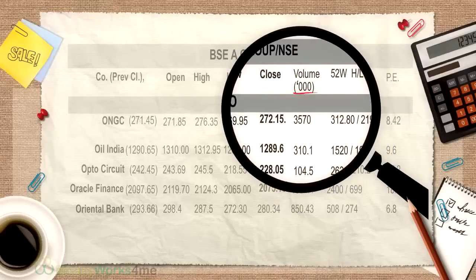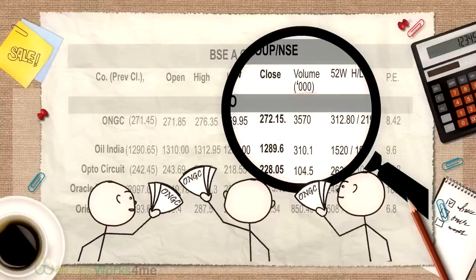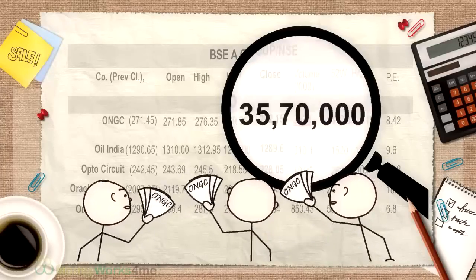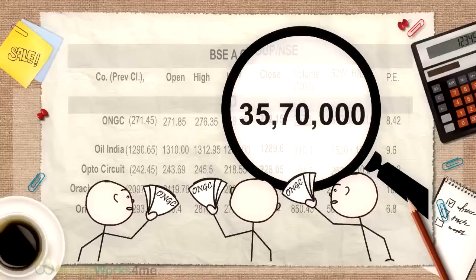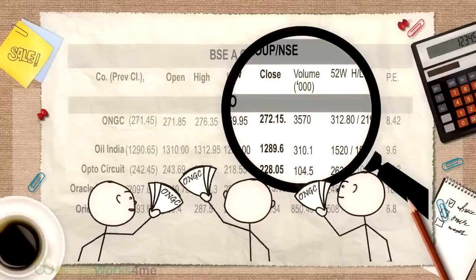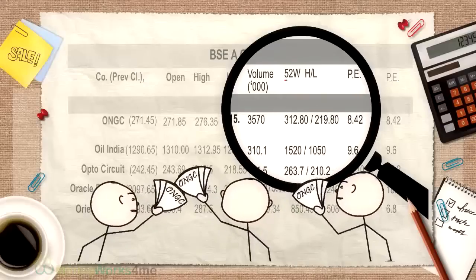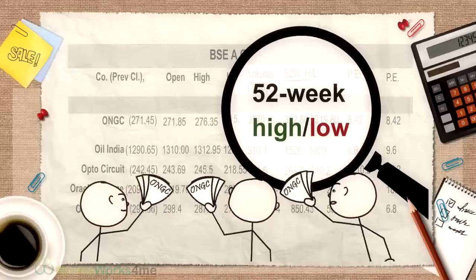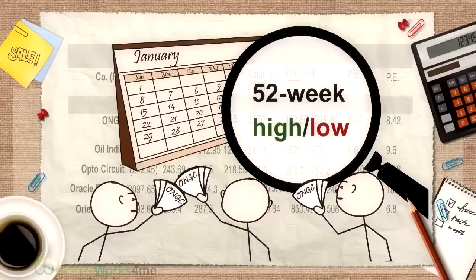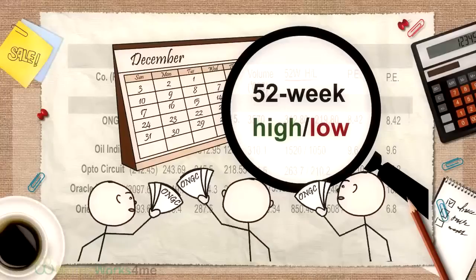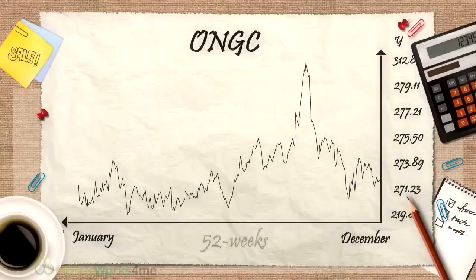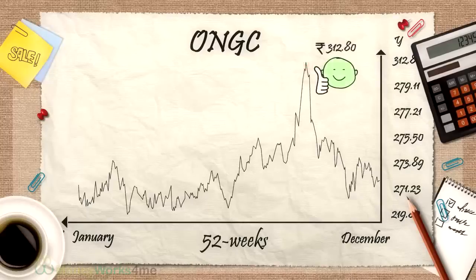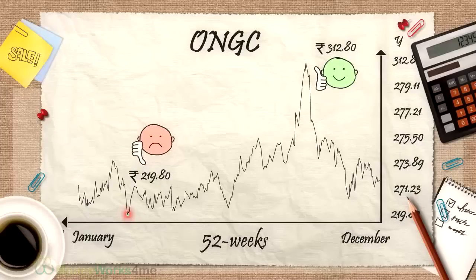The volume is usually given in units of 1,000 shares. In this case, a total of 35,70,000 shares were traded on the exchange that day. After that comes the 52-week high-low of the stock. This tells you the highest and lowest price the stock was traded at during the preceding 52 weeks, that is, one year. In this case, during the preceding 52 weeks, ONGC had touched a high of Rs. 312.80 and a low of Rs. 219.80.